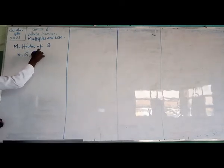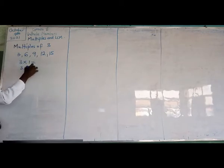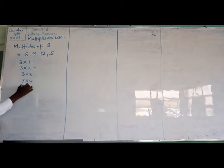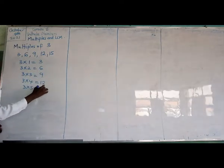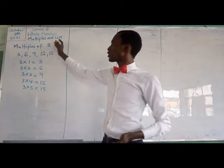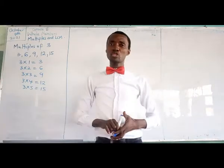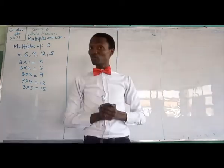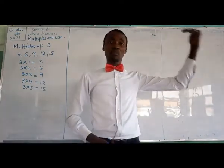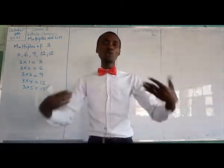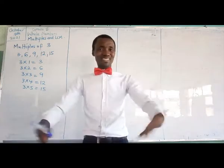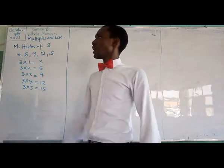For instance, 3 times 1, 3 times 2, 3 times 3, 3 times 4, 3 times 5 — that gives us 3, 6, 9, 12, and 15. That's what we need when looking at the multiples of 3. For Grade 8, we expect that you should be able to handle the multiples of numbers from 1 to about 20. You should be able to memorize them — it should come easily, like water flows out of you.